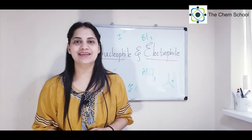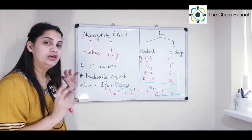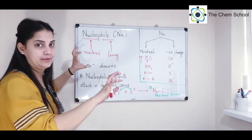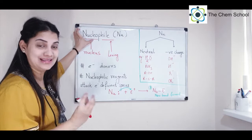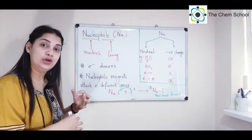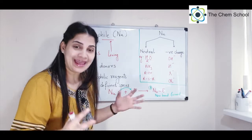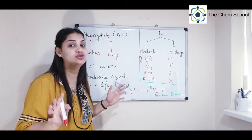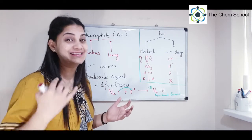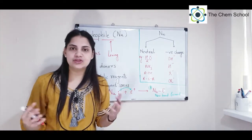Let's get started with the first part: nucleophile. Just look at the name and split it into two parts — nucleo and phile. Nucleo means nucleus while phile means loving, so nucleophiles are nucleus-loving species. In chemistry, if a species is nucleus-loving, it means it is electron rich.